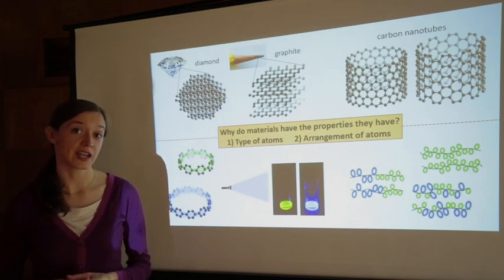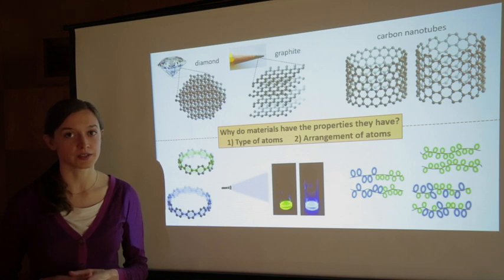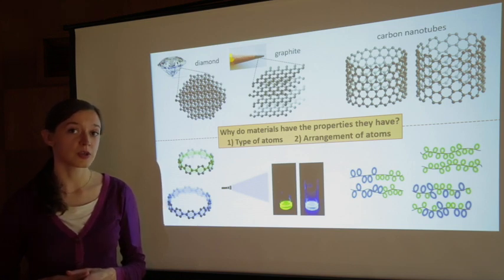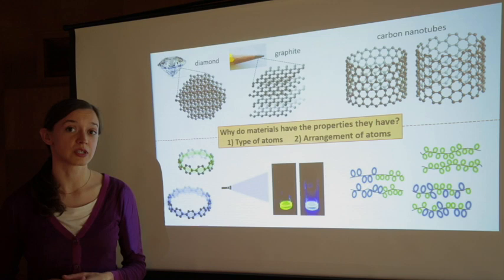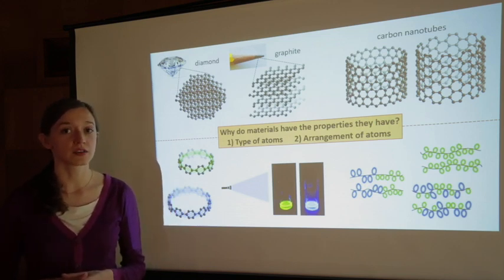One thing you might think of is the type of atoms in the material. Atoms are the tiny bits of matter that make up everything around us. Atoms like carbon, nitrogen, and oxygen make up most of the materials in our bodies and other living things, whereas metals and minerals have atoms like iron, aluminum, and silicon.